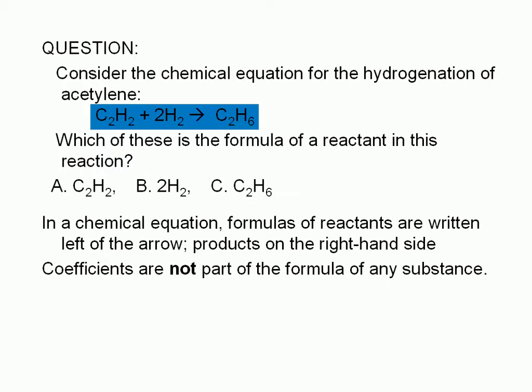In a chemical equation, formulas of reactants are written on the left-hand side, and formulas of products are written on the right of the arrow.